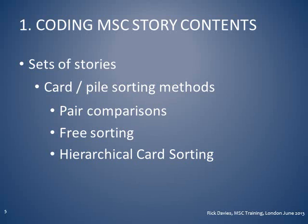The first part of the explanation about how to do content analysis is about coding, and in particular about how we can code whole sets of stories. The method I want to describe is called card or pile sorting. This is a method used by ethnographers and anthropologists, and some of you may be familiar with its use as part of the PRA portfolio of methods — for example, wealth ranking exercises. It is important to point out that it is both the product and the process which matter here — we want the results of these card sorting exercises, but we also need to hear people's explanations of what they are doing as they do it.